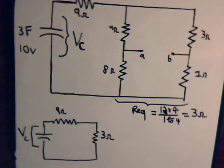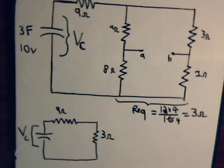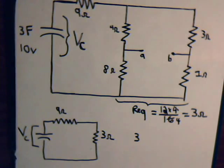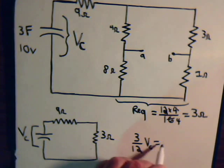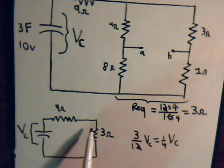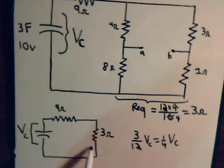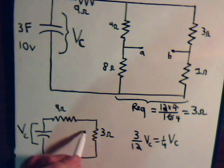Now for this circuit, what is the voltage drop across the 3-ohm REQ? It's going to be 3 divided by all the resistors in series with it — 9 plus 3 is 12 — times the voltage Vc. That gives us 3/12, which is 1/4 Vc. So the voltage drop across REQ is 1/4 Vc, and the remaining 3/4 Vc drops across the 9-ohm resistor. Together they add up to Vc.